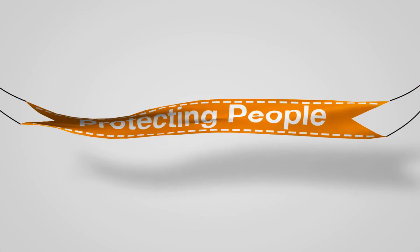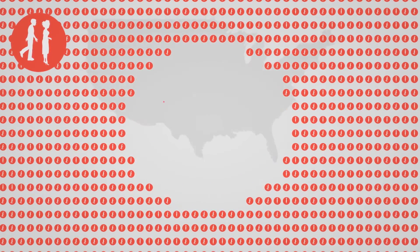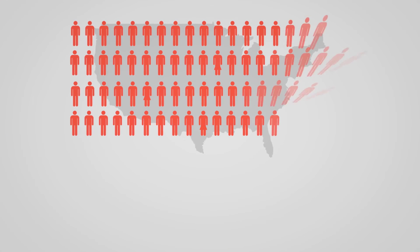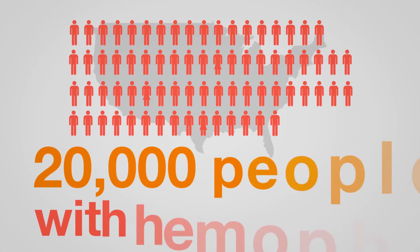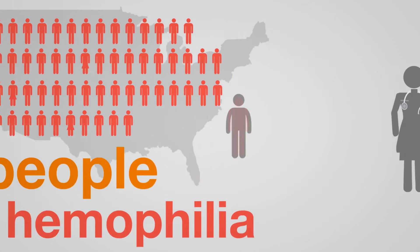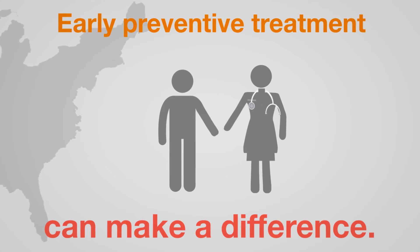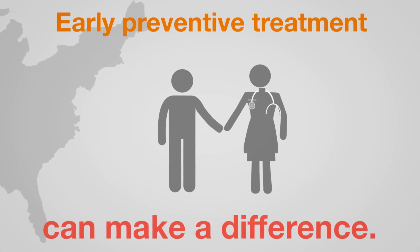Blood disorders affect millions of Americans, regardless of age, race, gender, or income. For example, the center's data show that there are about 20,000 people with hemophilia, mostly males, in the U.S. Treatment is expensive, but our research shows that early treatment can make a difference.